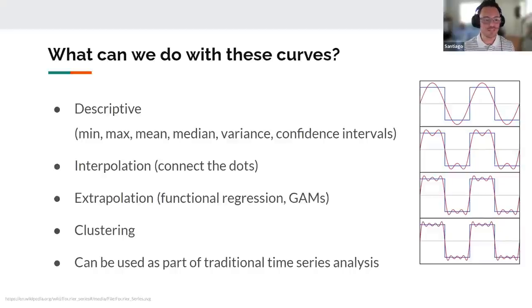You can do interpolation things, such as connecting the dots, right? If you have meter reads and you want to show a line, instead of using the default plotting method, you could use functional data analysis and connect the dots a little bit more smoothly. You can do extrapolation. Functionally, that looks like functional regression if you want to do some inferential type work. If you're doing some predictive work, you can use GAMs. If you've ever used that, you're using functional data analysis on the back end. That uses cubic splines. A relatively newer approach is clustering. You can cluster the curves. And then if you're doing time series analyses, you can use some of these techniques as part of that as well.